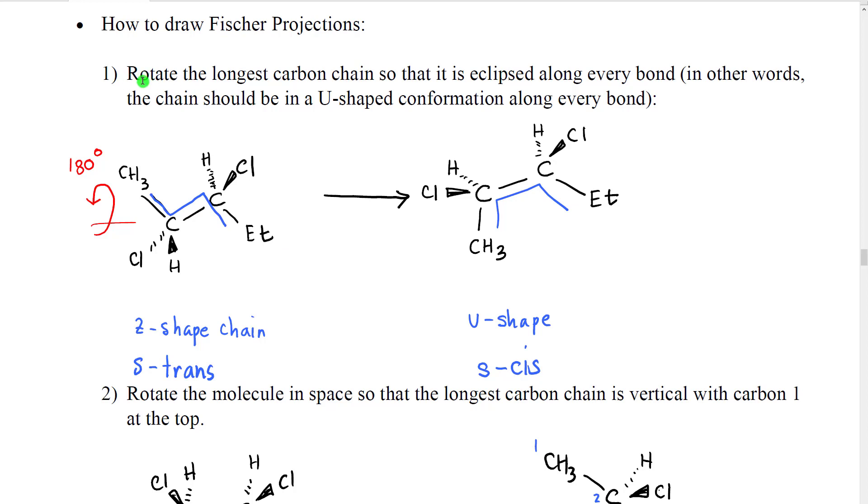In the first step what we're going to do is we're going to rotate the longest carbon chain so that it is fully eclipsed along every bond. Now what I mean by that is that if we look at the shape of the carbon chain going from one group to a carbon along a bond and then to the other part of the longest carbon chain, it can take two basic shapes. The first one would be where the chain looks like a Z, it goes back and forth.